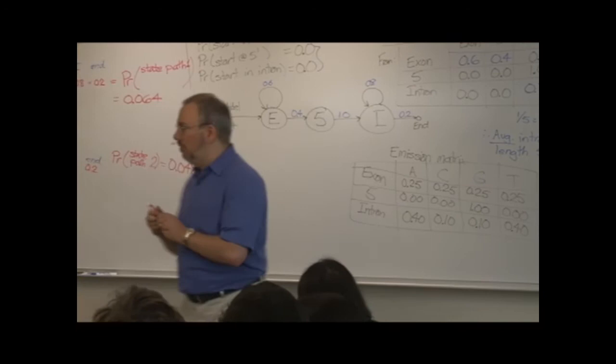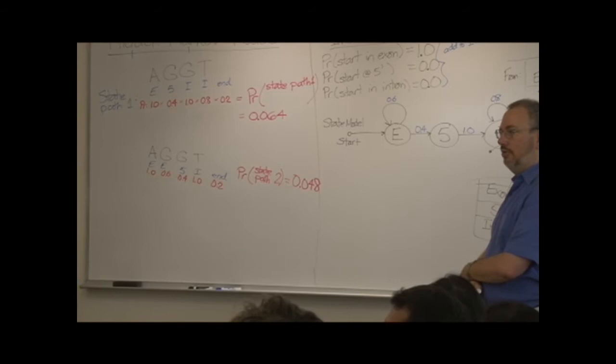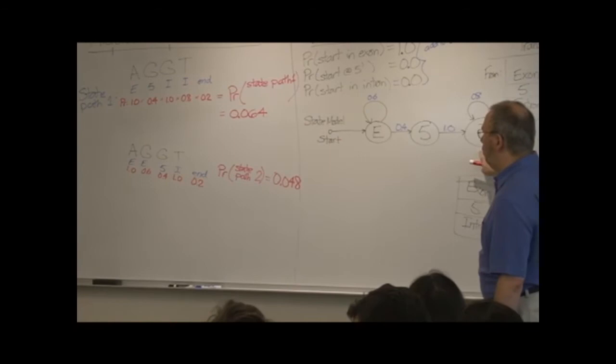And that's because here that's 1.0 times 0.6 times 0.4 times 1.0 times 0.2. That should multiply out to 0.048. If I've done it correctly. Yes, sir? In the computer, would it come up with all of the state paths? Because there's some pretty boring ones there. Oh, absolutely. And in fact,